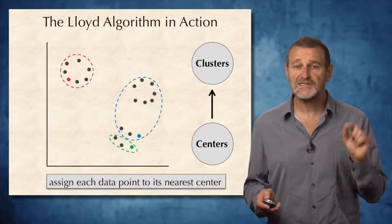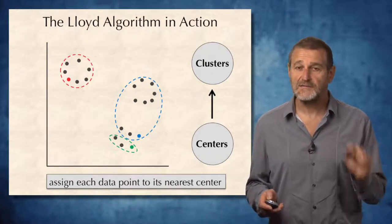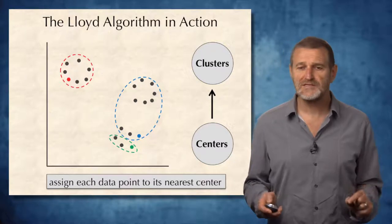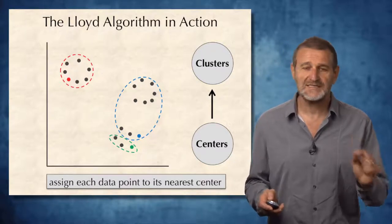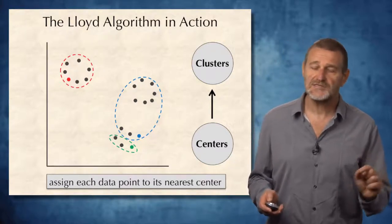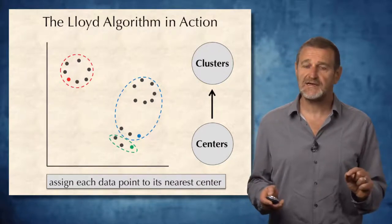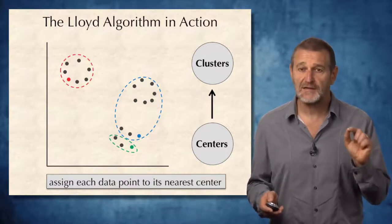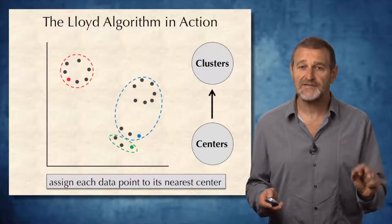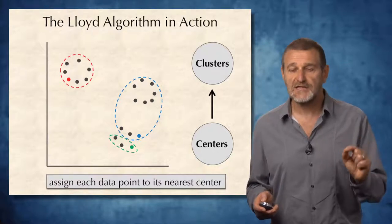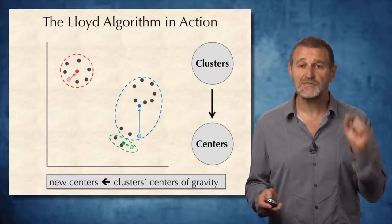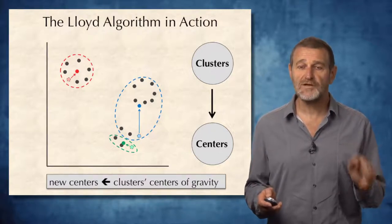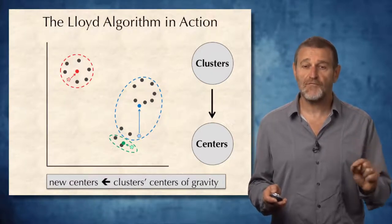Now, after we constructed clusters, we should question our wisdom in initial choice of centers. Let's take a look at the blue cluster. Its center is definitely in the wrong position. Because as we learned from the center of gravity theorem, the optimal position of centers for every cluster should be at the center of gravity of the cluster. And therefore, the clusters to centers step of the Lloyd Algorithm is essentially moving all centers to the centers of clusters.